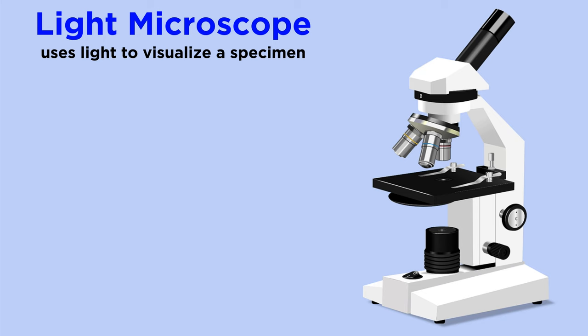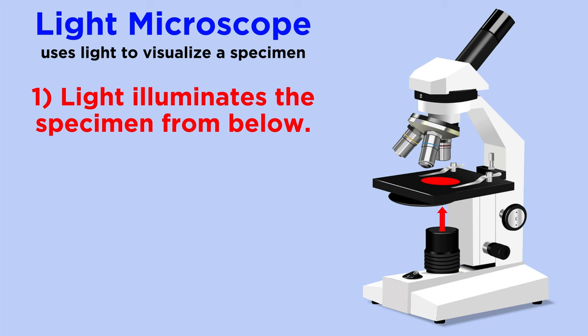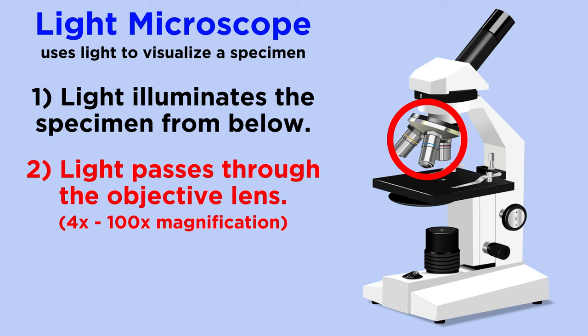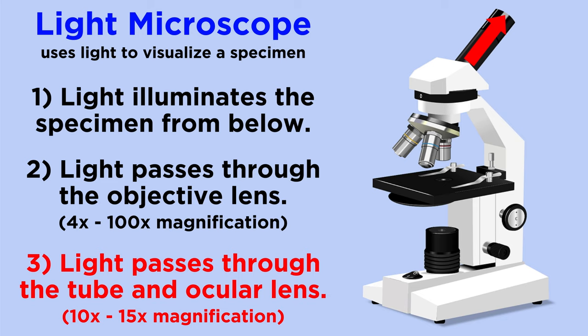The light microscope, as the name implies, uses light to visualize something. The light passes through a lens, which focuses the light onto the specimen. After passing through the specimen, the light passes through the objective lens, which magnifies the image from four to one hundred times its original size.